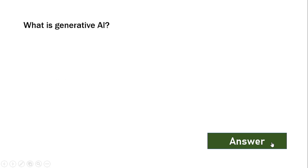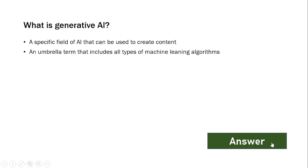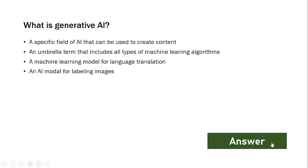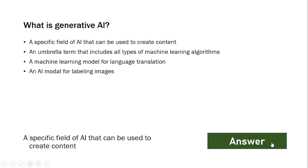What is generative AI? The options are: a specific field of AI that can be used to create content; an umbrella term that includes all types of machine learning algorithms; a machine learning model for language translation; an AI model for labeling images. The answer is: a specific field of AI that can be used to create content.